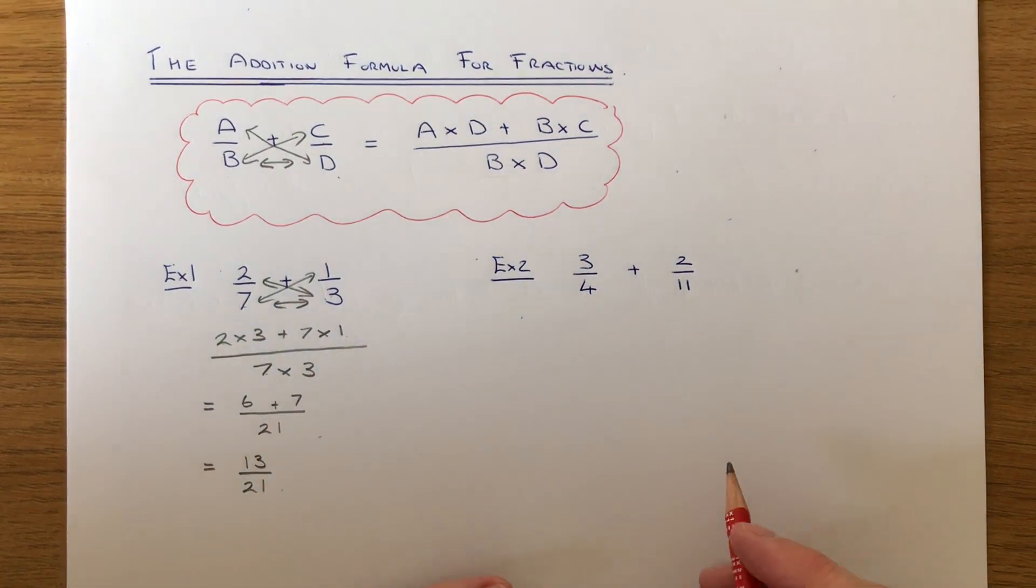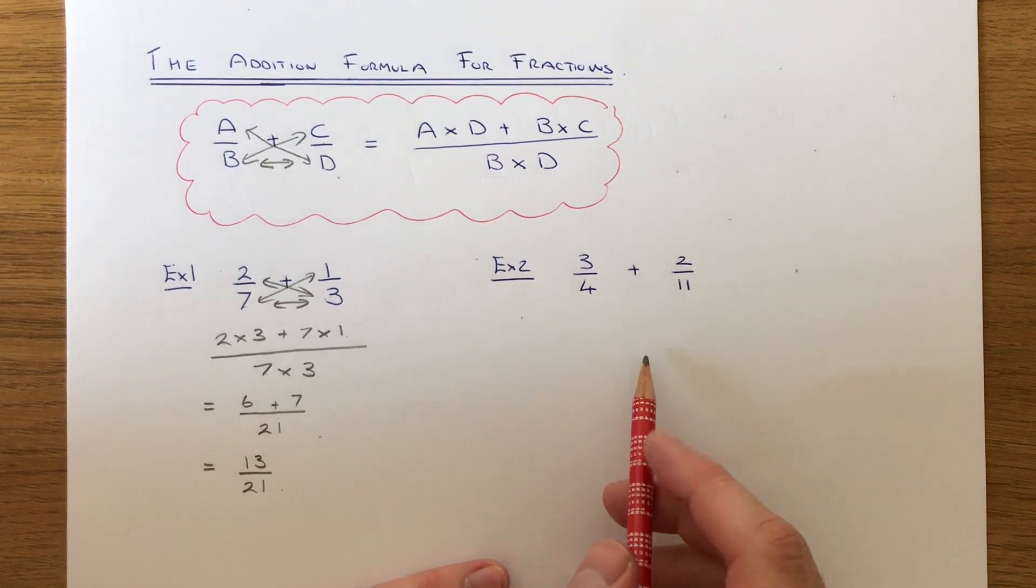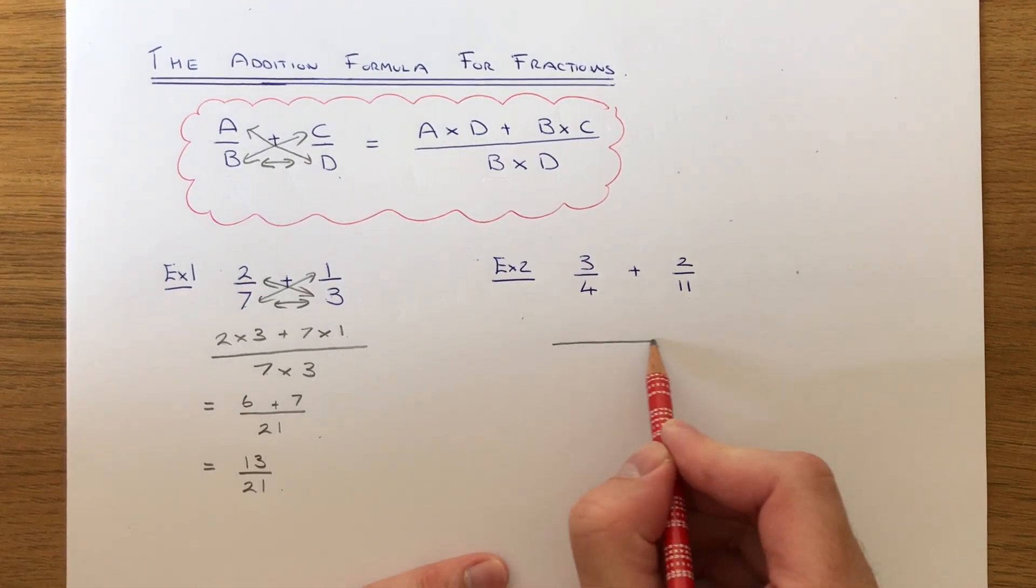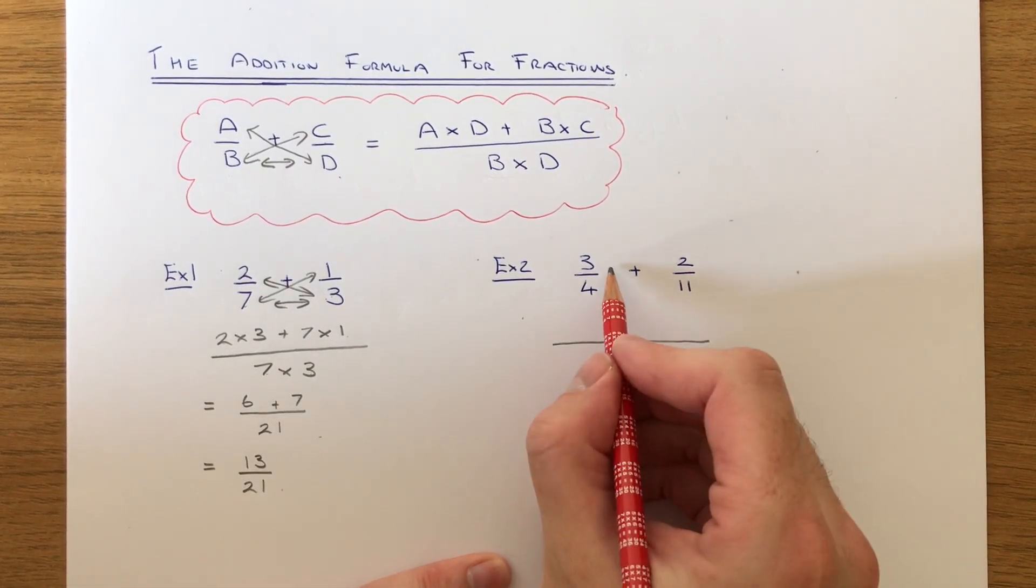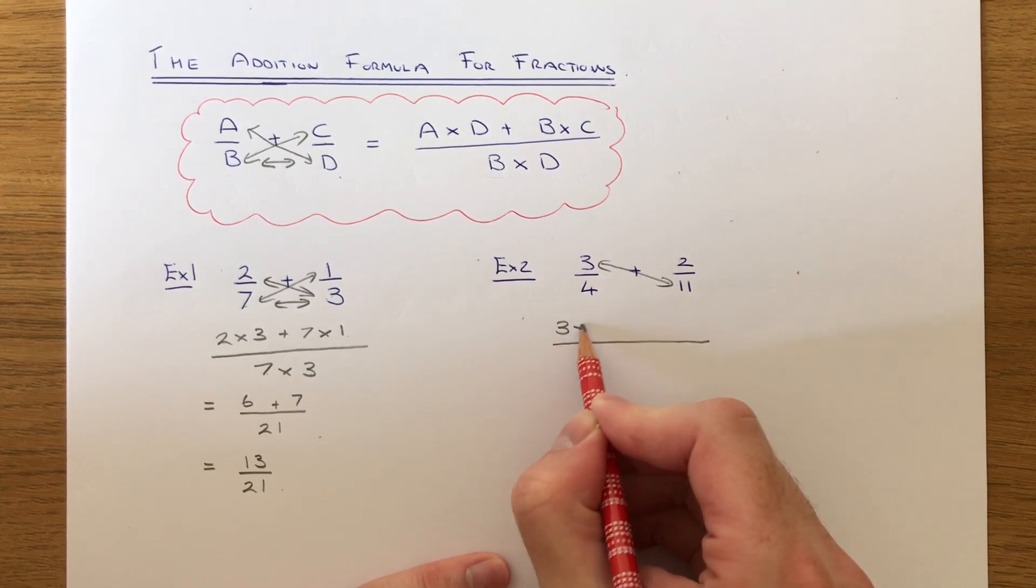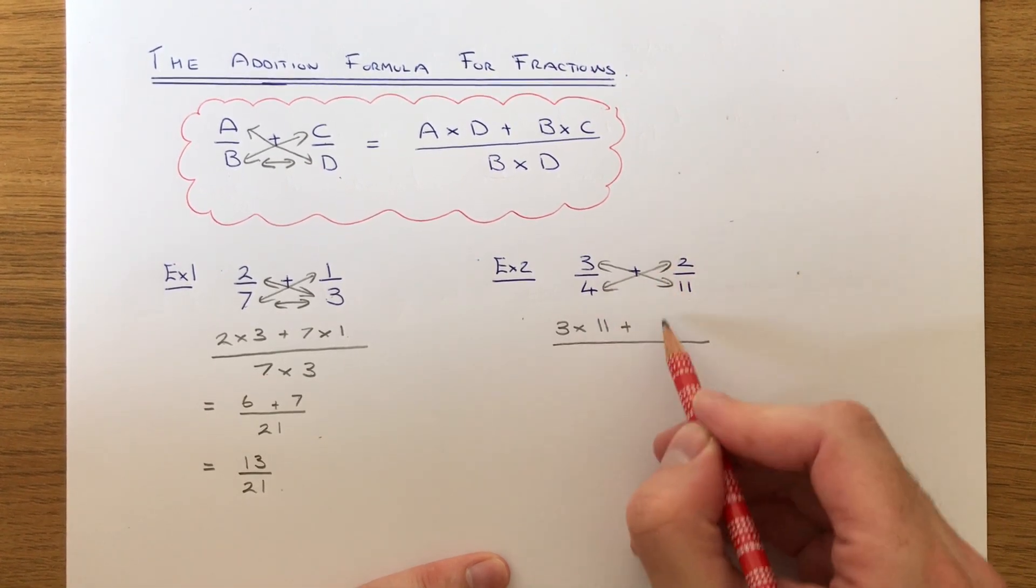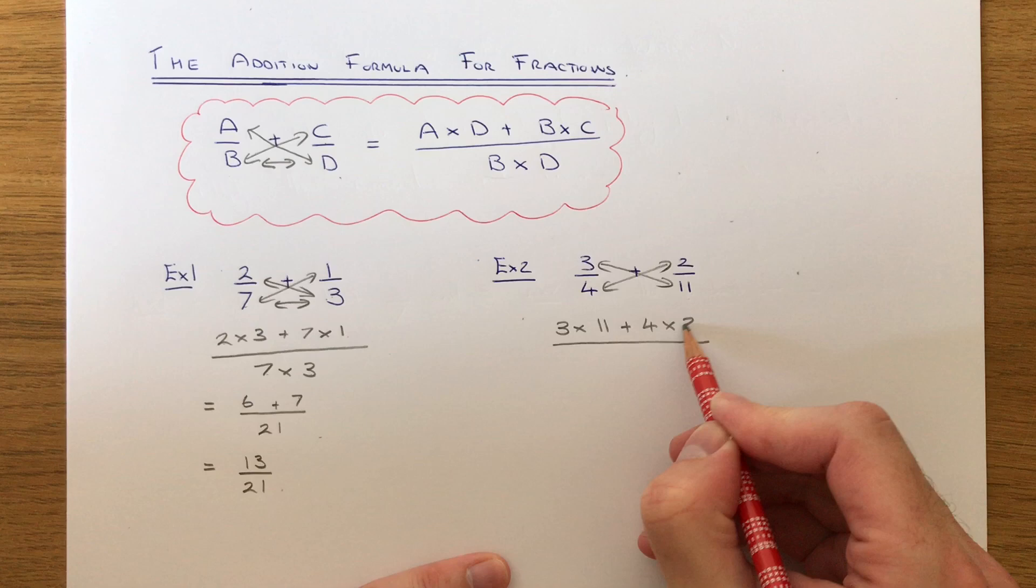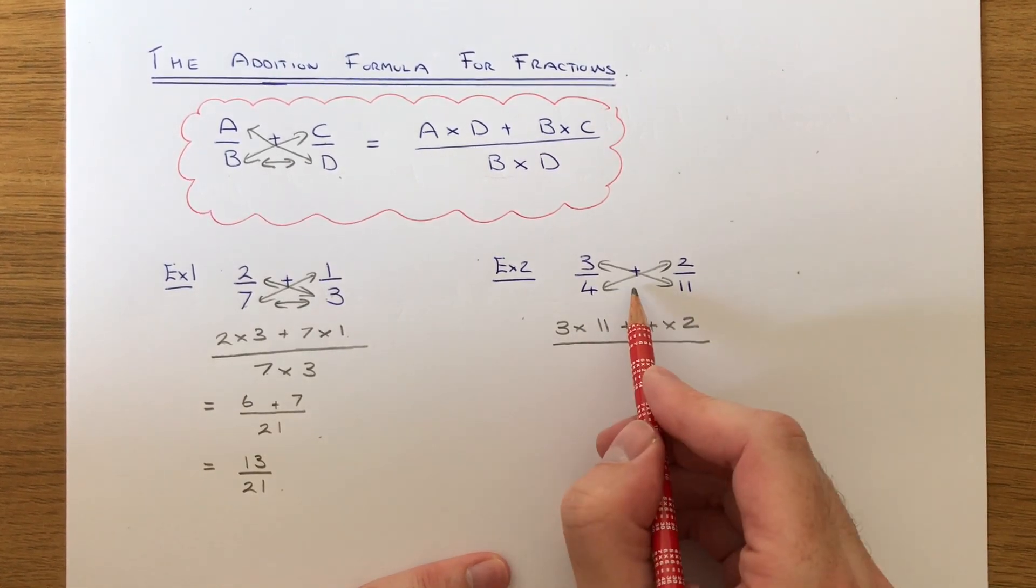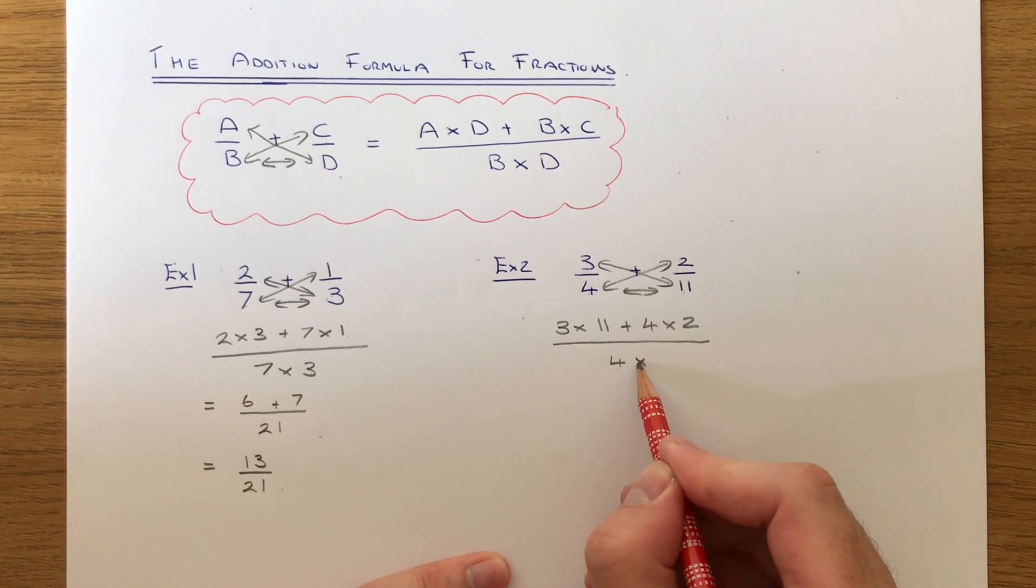Let's move on to example two. We've got three quarters plus two elevenths. On the top of the fraction, we need to multiply the three by the eleven and then add on the four times the two. On the bottom of the fraction, we need to multiply the four by the eleven.